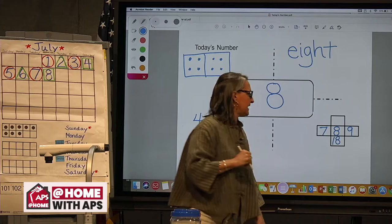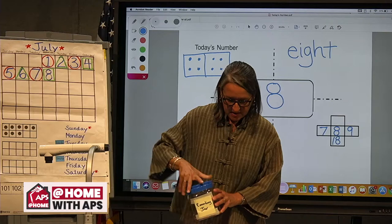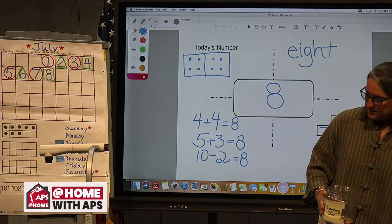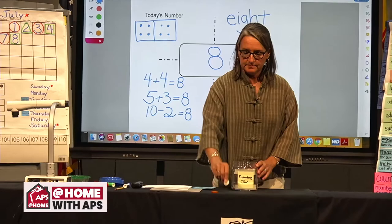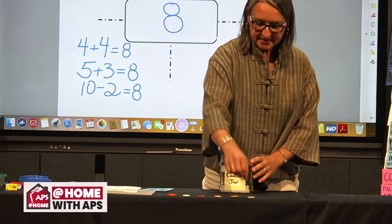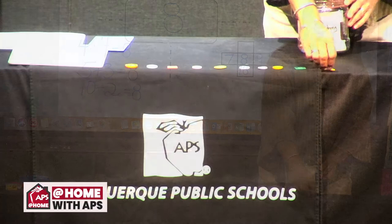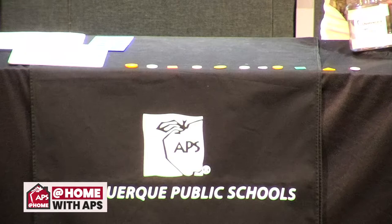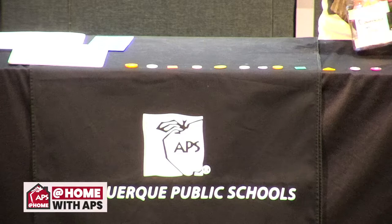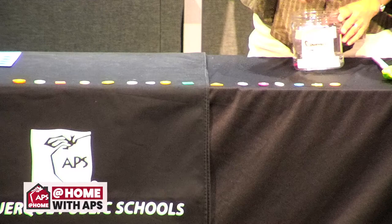Let's do our counting jar. Today we're going to count buttons. Ready? One, two, three, four, five, six, seven, eight, nine, ten, 11, 12, 13, 14, 15, 16, 17, 18, 19. How many buttons do we have altogether? That's right, we have 19.